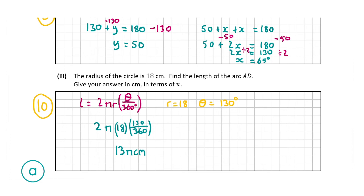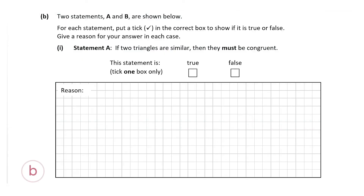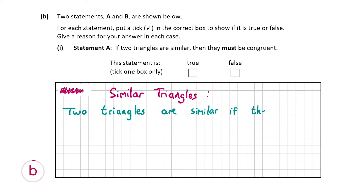Now let's look at part B, which shows two statements we have to say are true or false. Statement A says: if two triangles are similar then they must be congruent. Before answering, here are the definitions. Two triangles are similar if the three angles are the same — the lengths of the sides do not need to be the same, only the angles must be equal.